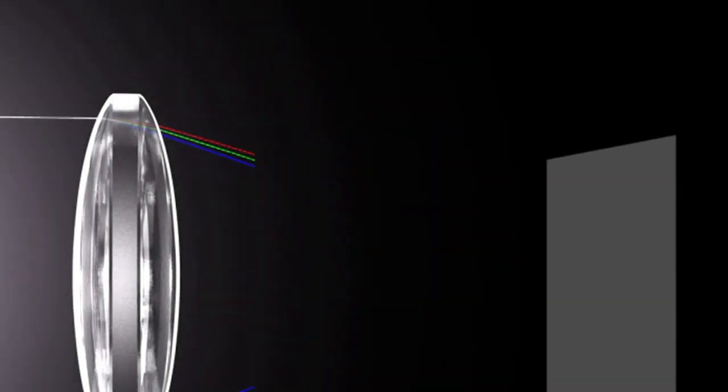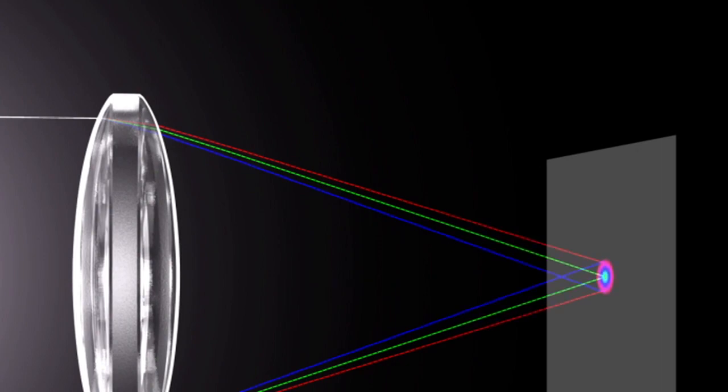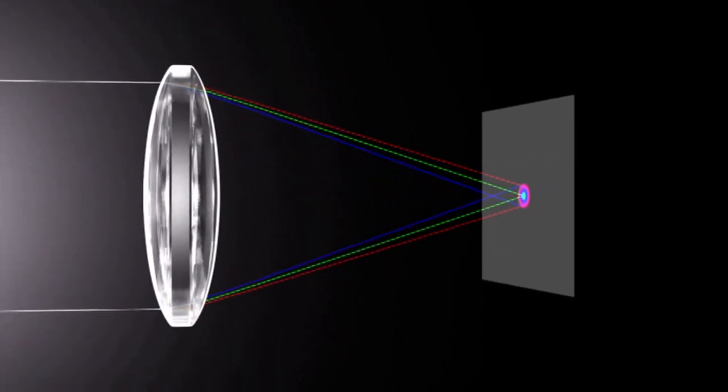The focal point for blue light, which has a short wavelength, is closer than that for red light, which has a long wavelength. This causes the colors to bleed.